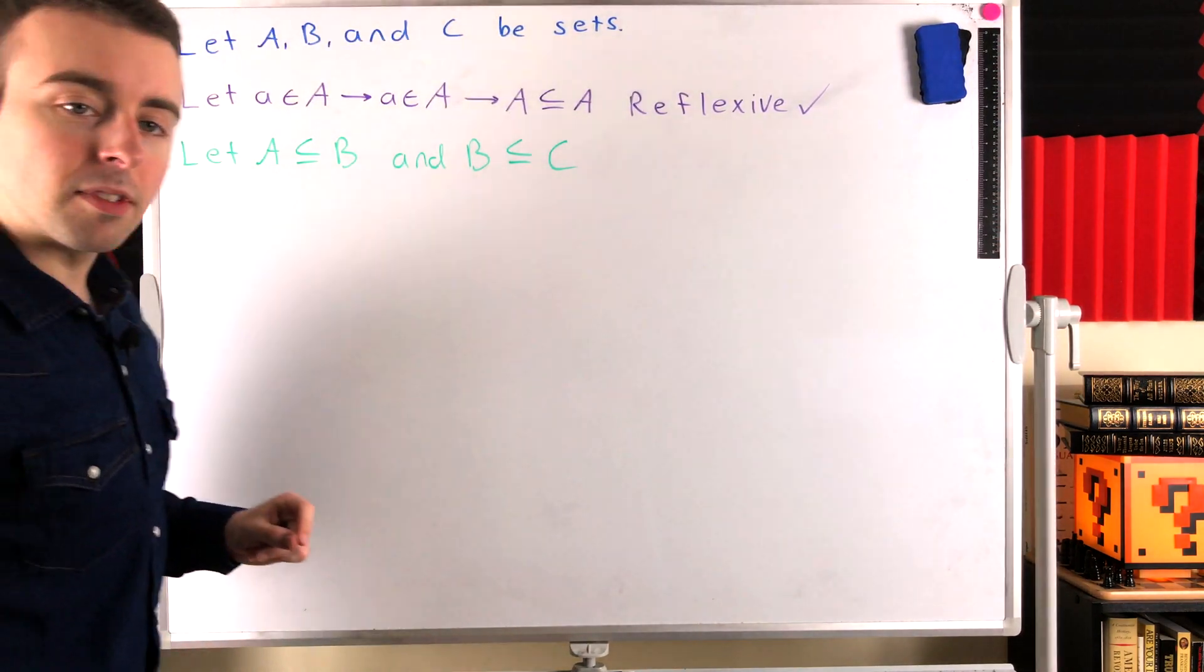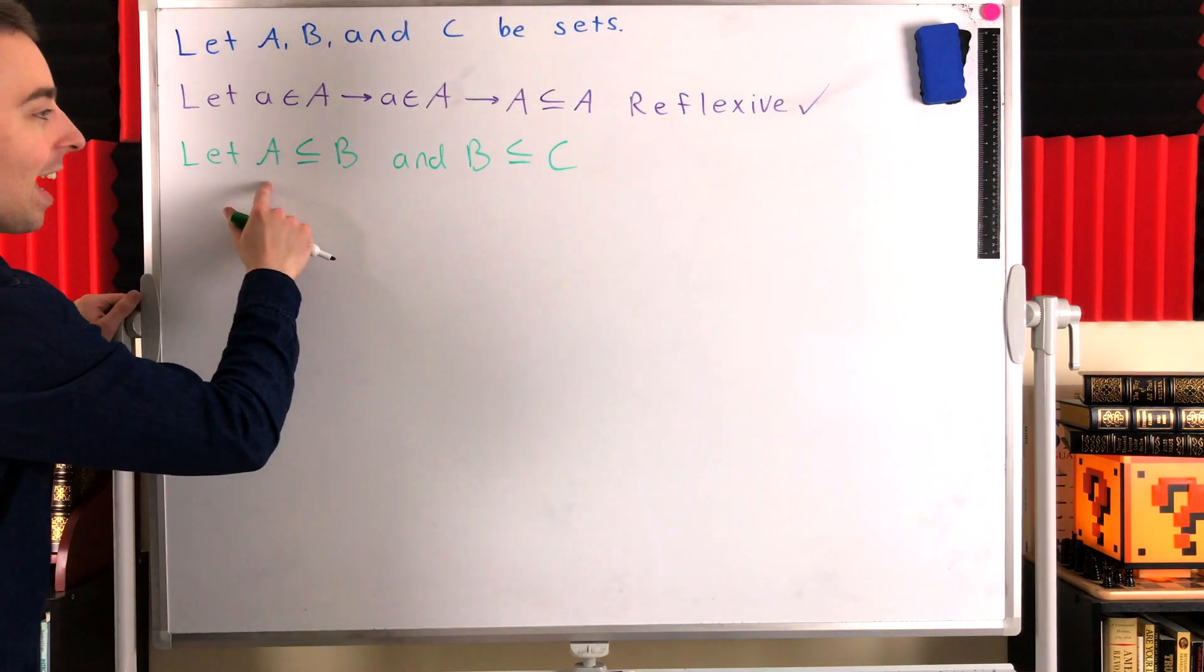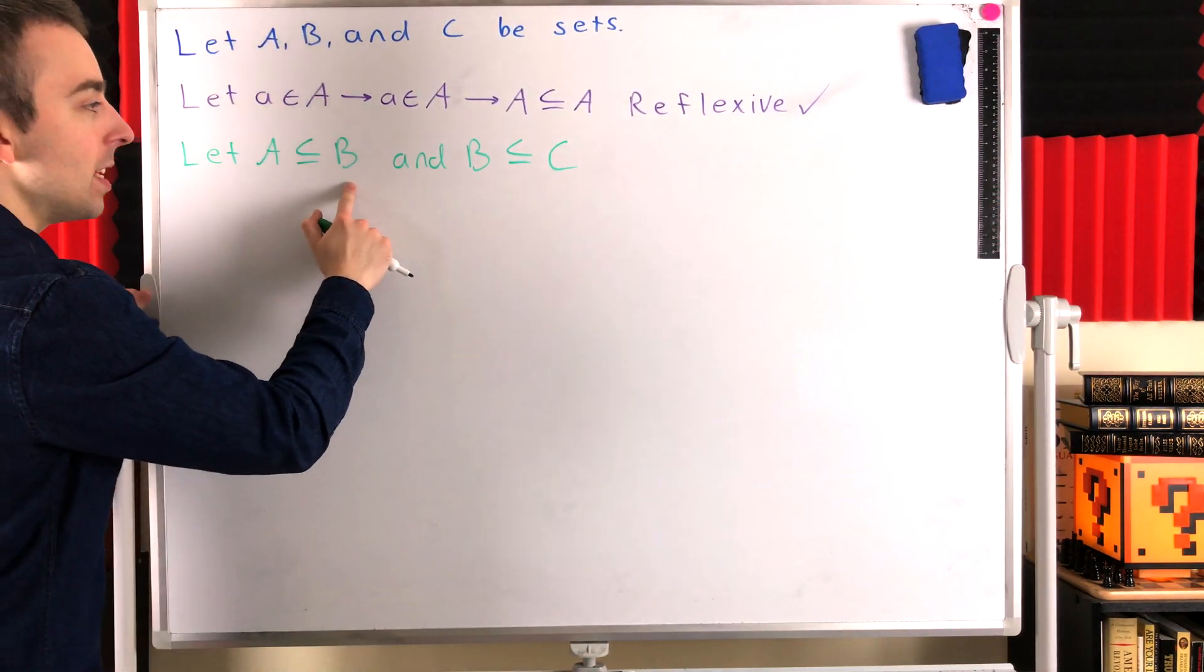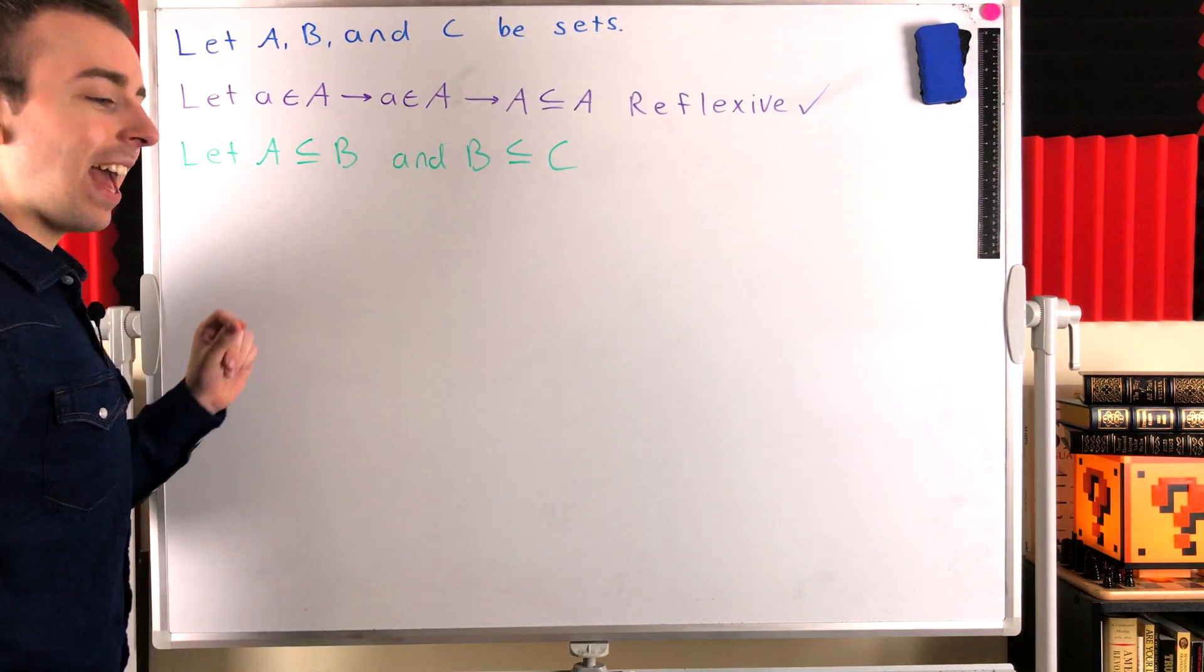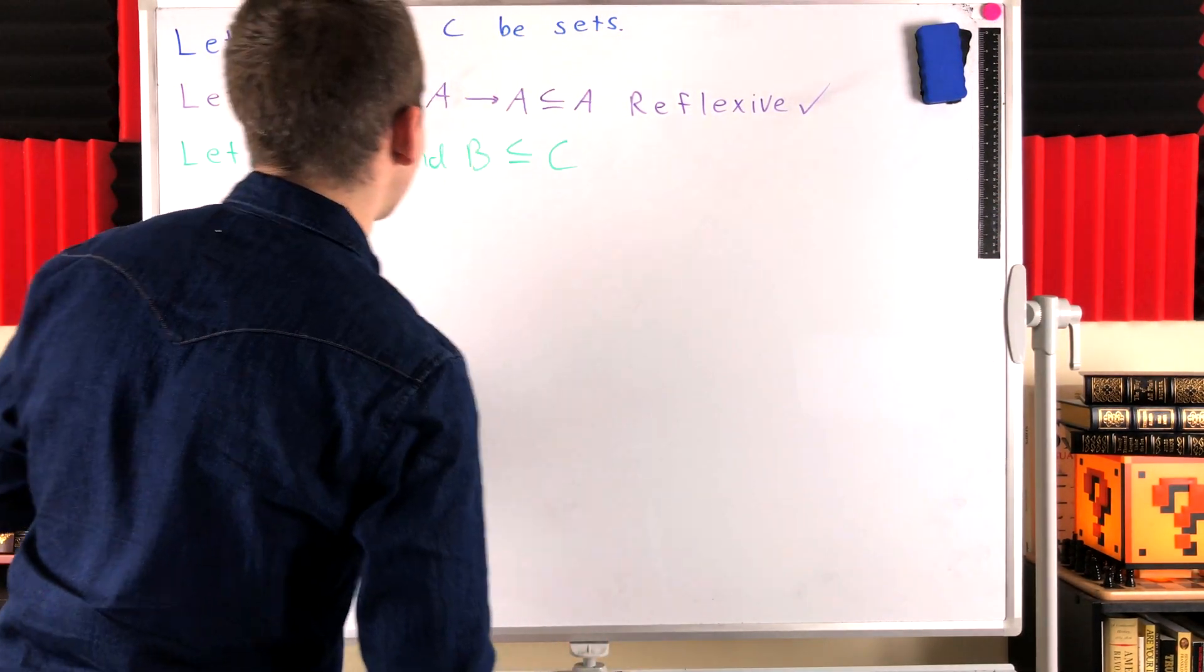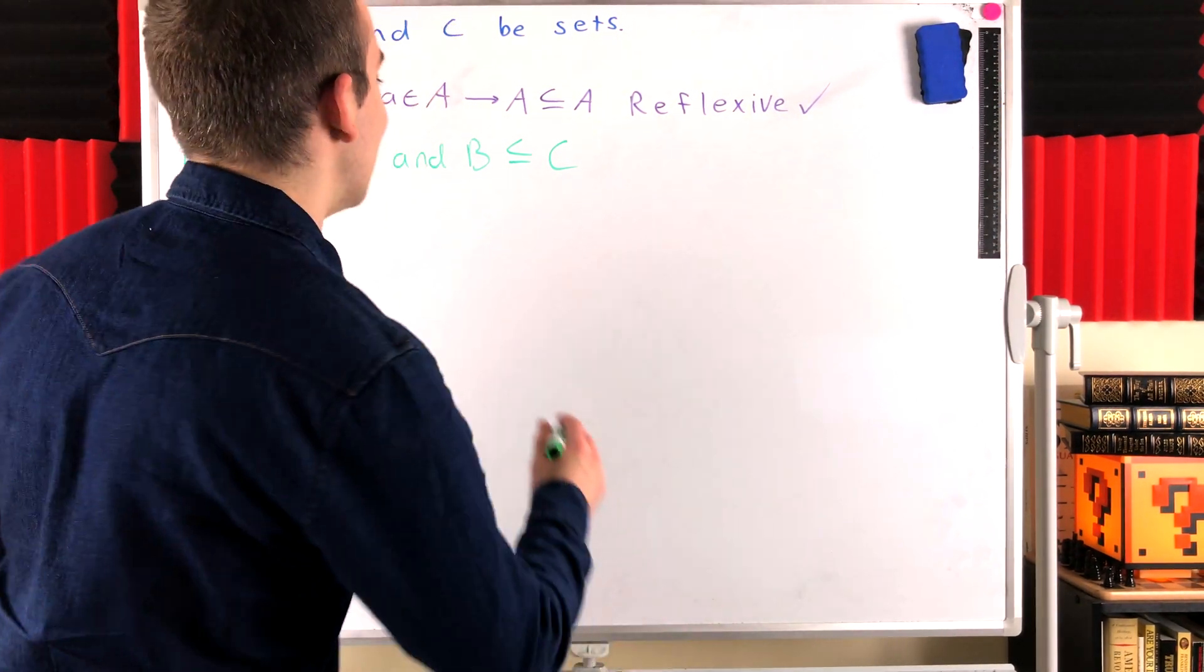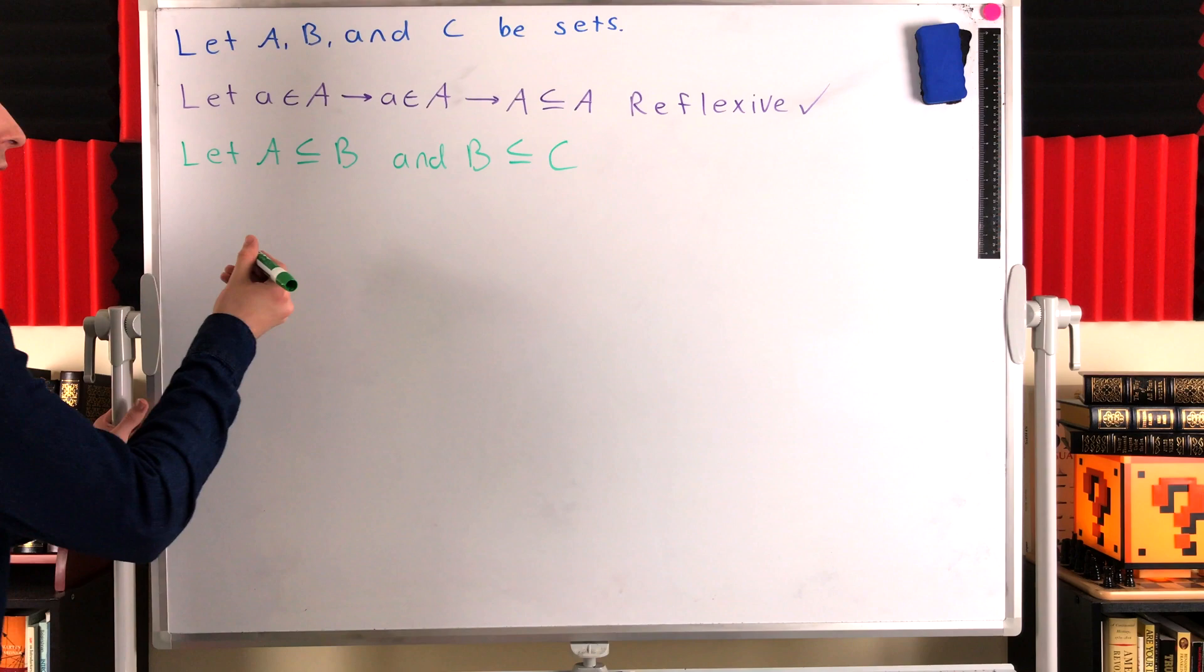In order for the subset relation to be transitive, this must imply that A is a subset of C. If A is a subset of B, and B is a subset of C, A is a subset of C. That's what it would mean for this to be a transitive relation. So is it transitive? You probably already know, yes, indeed it is, but let's make sure we know why.